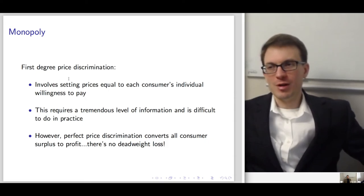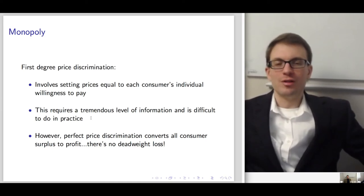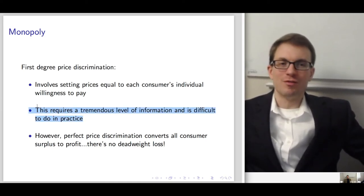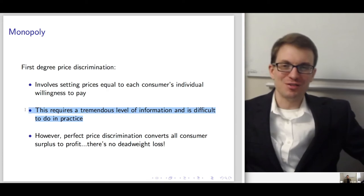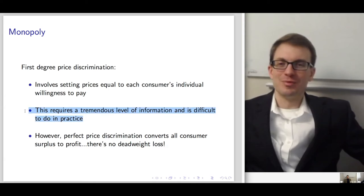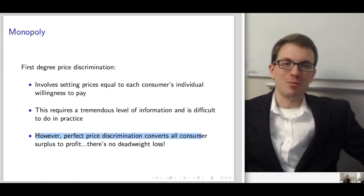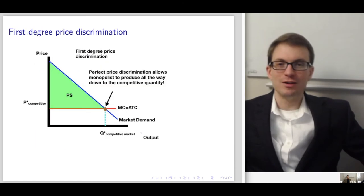First-degree price discrimination involves setting prices equal to every consumer's individual willingness to pay. This requires quite a bit of information — it's difficult to do in practice, although through the data collection efforts of internet retailers, this is becoming at least in principle a reality.